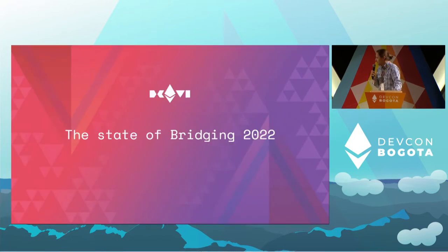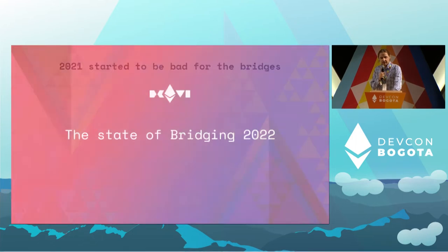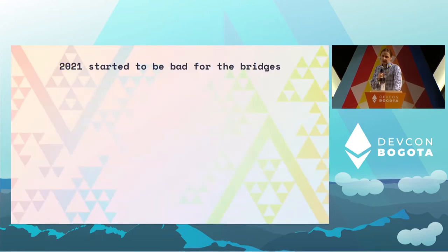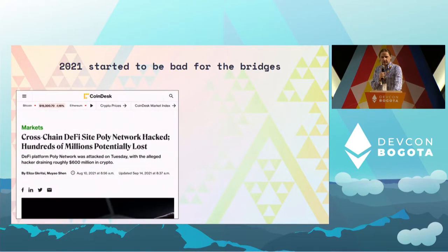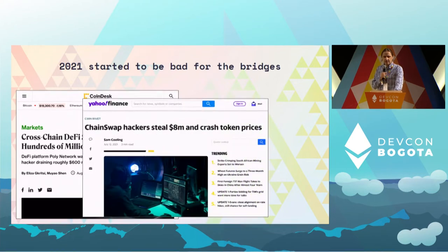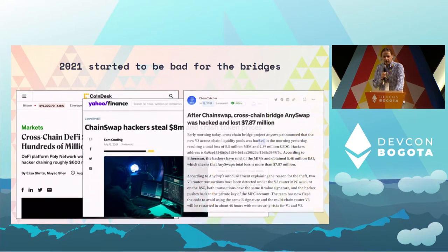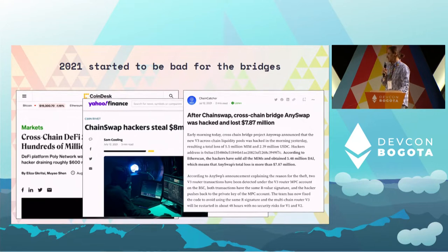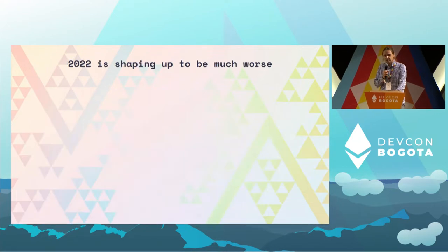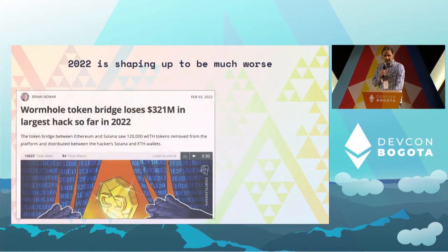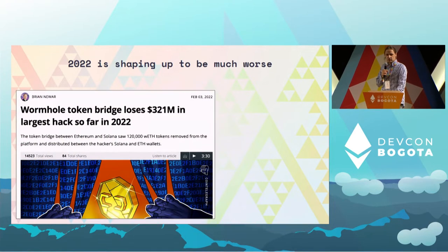So let's have a very quick look at the state of the bridges and where we are today. When we look back at the last year, it was a bad year. We had a hack at the Poly Network. We had a hack at the Chain Swap. We had a hack at AnySwap. So last year was really, really bad. But that doesn't really compare to what we witnessed this year, and it's really shaping up to be much, much worse.